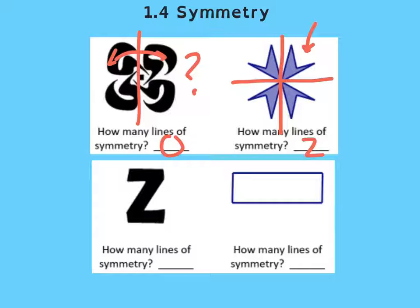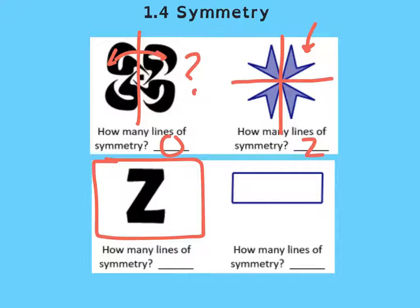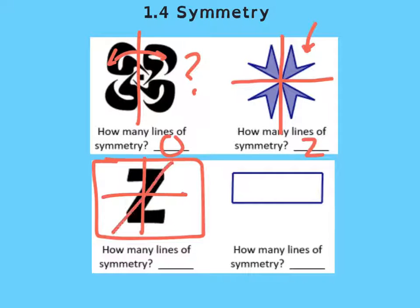This shape also has symmetry, but not the line symmetry we want. This is not a line of symmetry, so that wouldn't quite work. We couldn't cut it this way — that wouldn't work. The diagonal wouldn't work either. So it also has zero lines of symmetry.